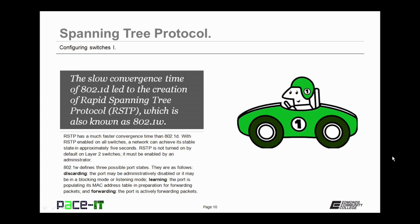Instead of 5 possible port states, RSTP defines 3 possible port states. The first is discarding — the port may be administratively disabled, or in a blocking or listening mode. The next state is learning, where the port is populating its MAC address table in preparation for forwarding packets. The final state is forwarding, where the port is actively forwarding packets.